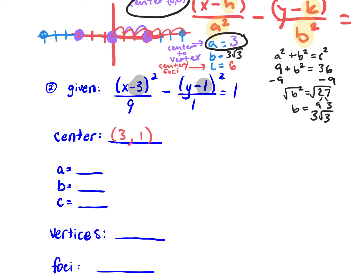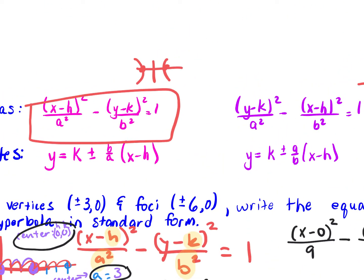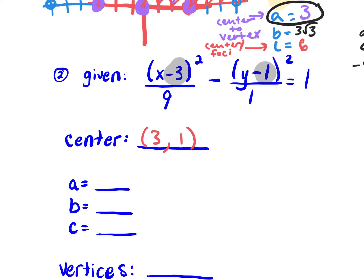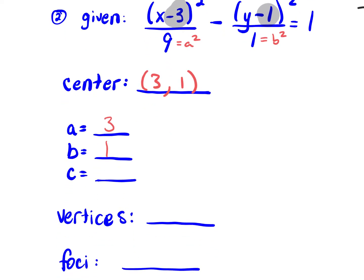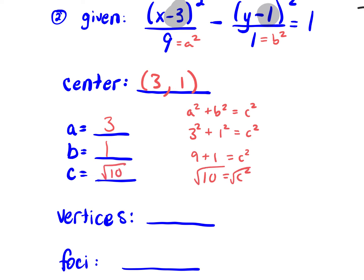So if a squared equals 9, our a is 3. The second term is b squared; if b squared equals 1, our b is 1. To find c, we use a squared plus b squared equals c squared: 9 plus 1 equals c squared, so 10 equals c squared, meaning c is the square root of 10.